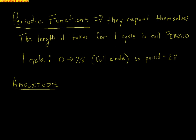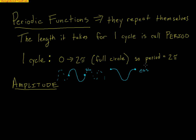These two functions are called periodic functions because they repeat themselves. The length it takes for one cycle is called the period length. The period length for both sine and cosine is one full circle, or 2 pi. For sine, one period starts at (0, 0), goes up to 1, down to negative 1, and back to 0. For cosine, one period starts at 1, drops to 0, down to negative 1, back to 0, and all the way back to 1.